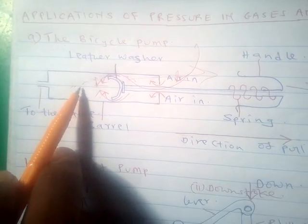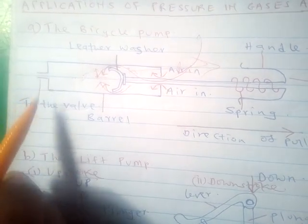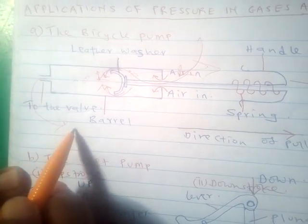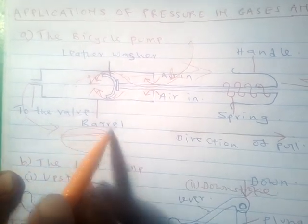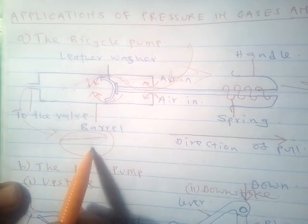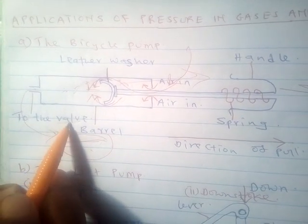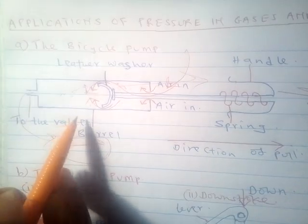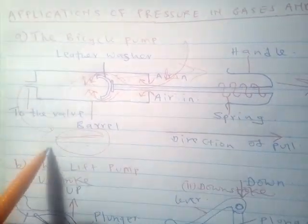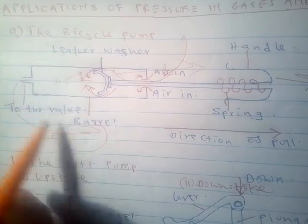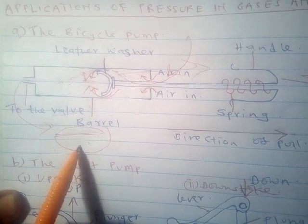The pressure of the air inside the barrel is lower than the pressure of the air inside the bicycle tire. Because of the greater pressure in the bicycle tire, it causes the valve of the bicycle tire to close, such that when the handle is pushed up, air is just trapped in the barrel but does not enter the tire because its valve is closed due to the high pressure in the tire.